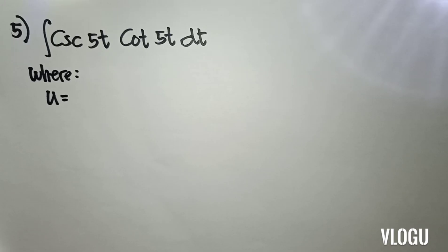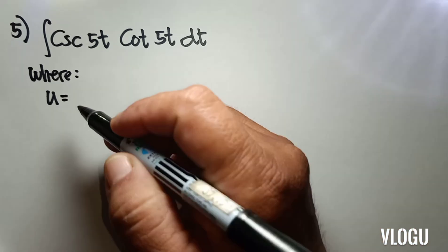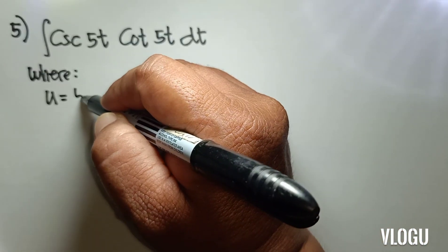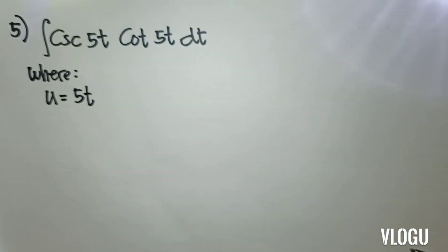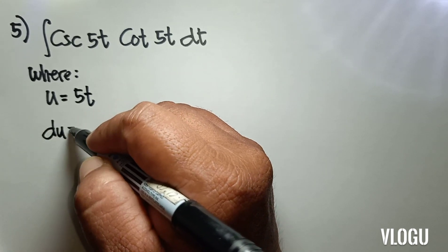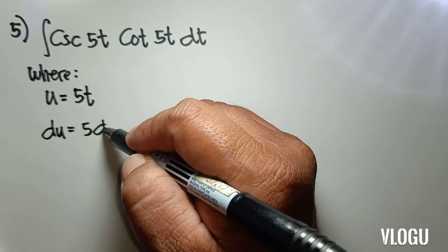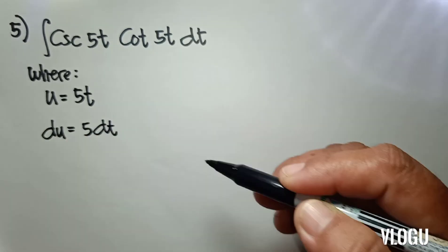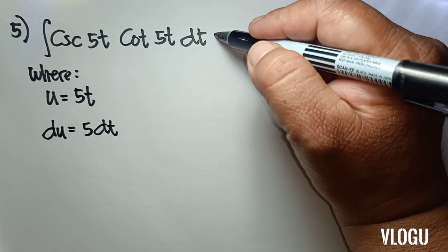Our next example is the integral of csc(5t) cot(5t) dt. In our given, u is equal to 5t, so du is equal to 5 dt.